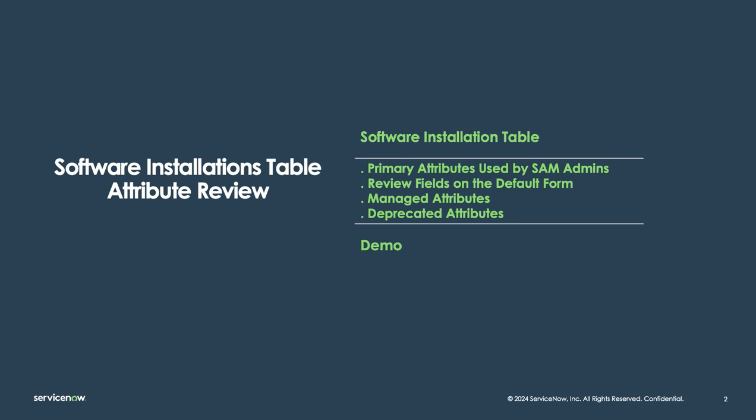In this video we'll show you how to get to the software installation table. We'll talk about those primary attributes a software asset manager is using or will want to use. We'll review the fields on the default form, and then we'll jump into a list of managed attributes coming in on this software installation table, as well as the ones that have been deprecated, before jumping into the demo.